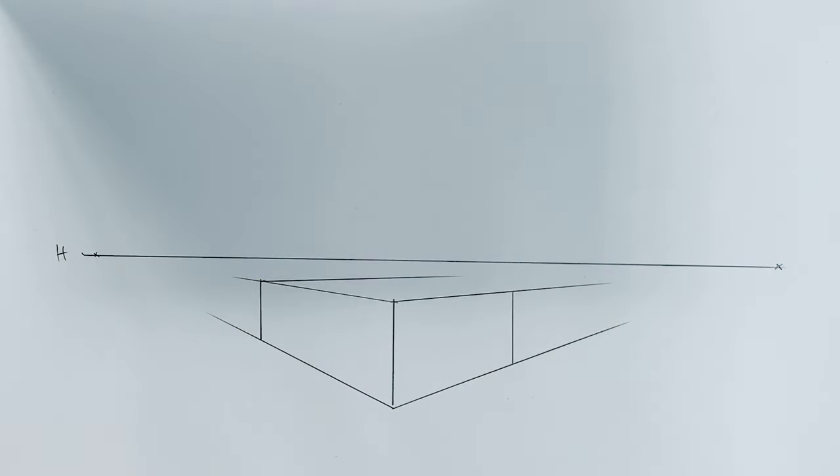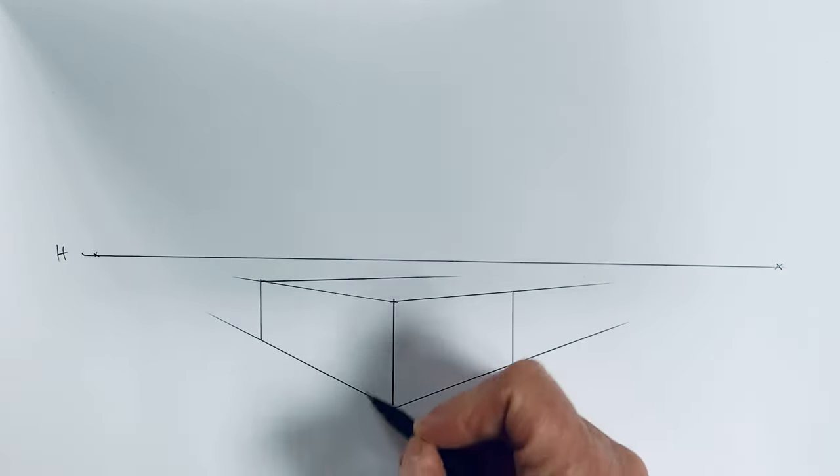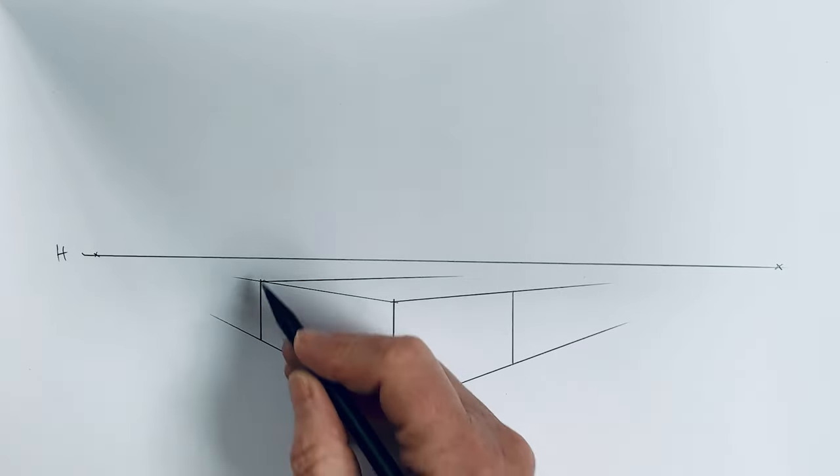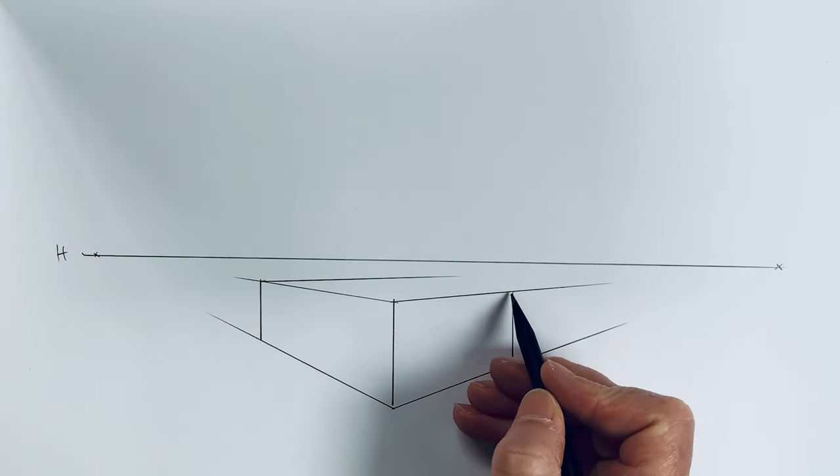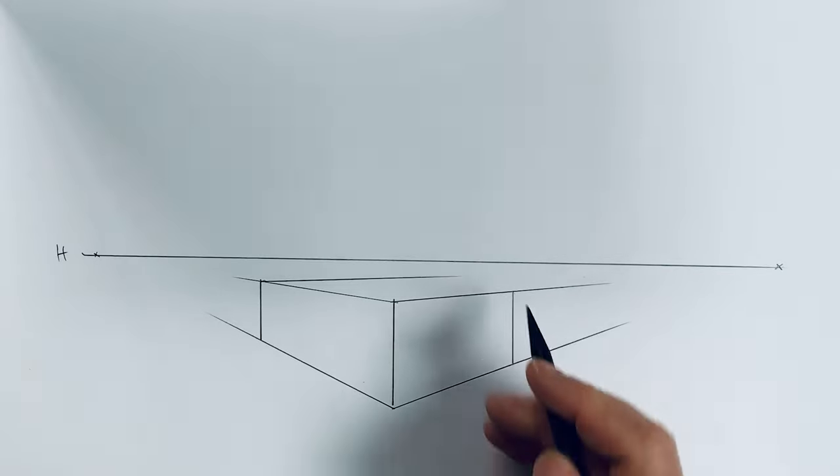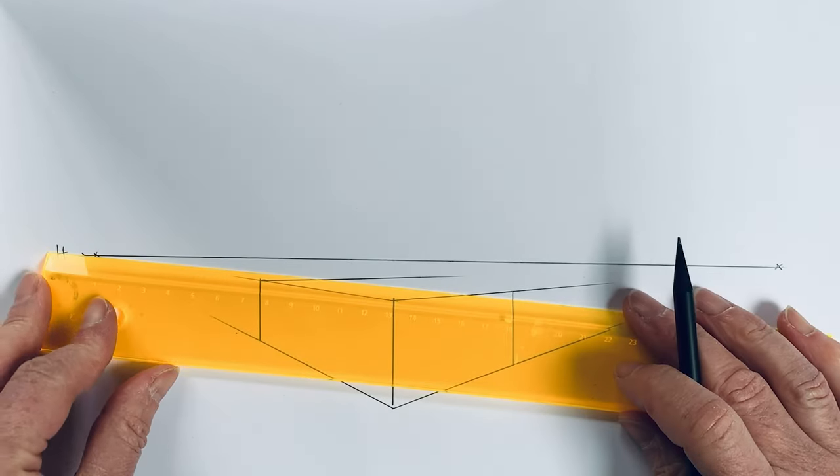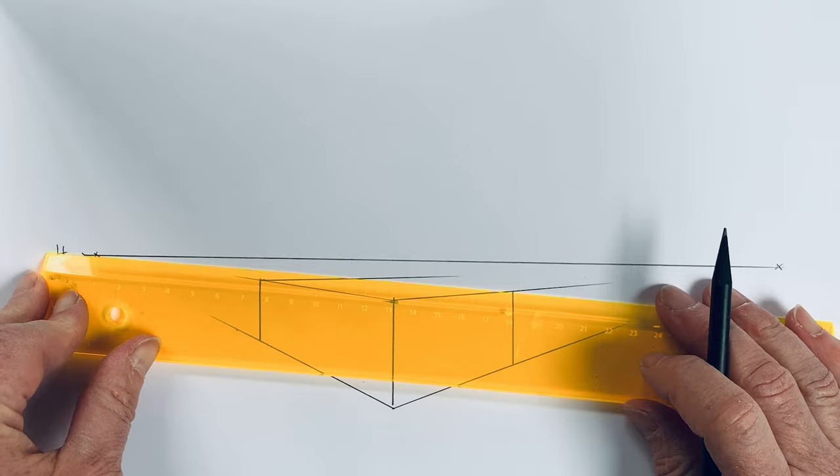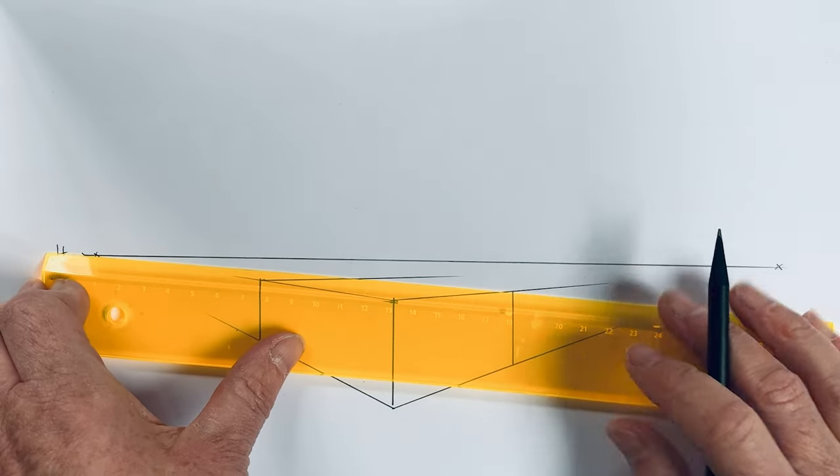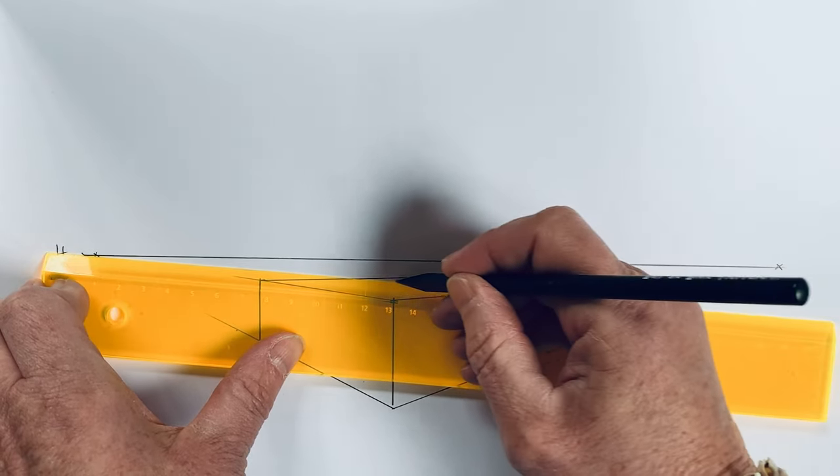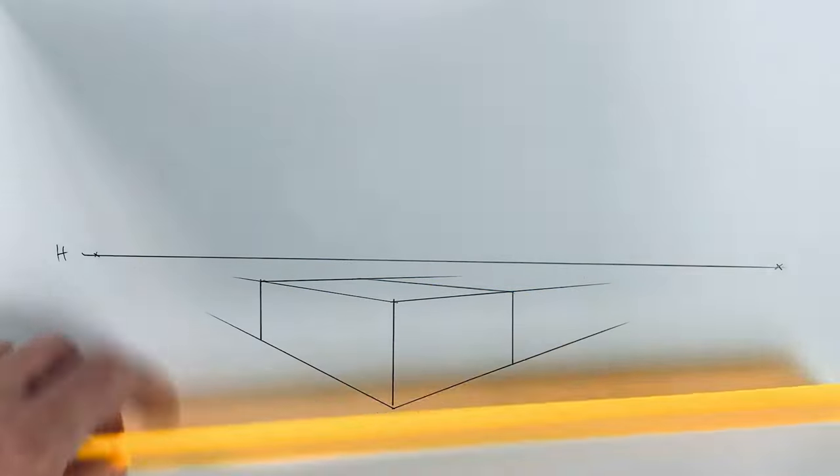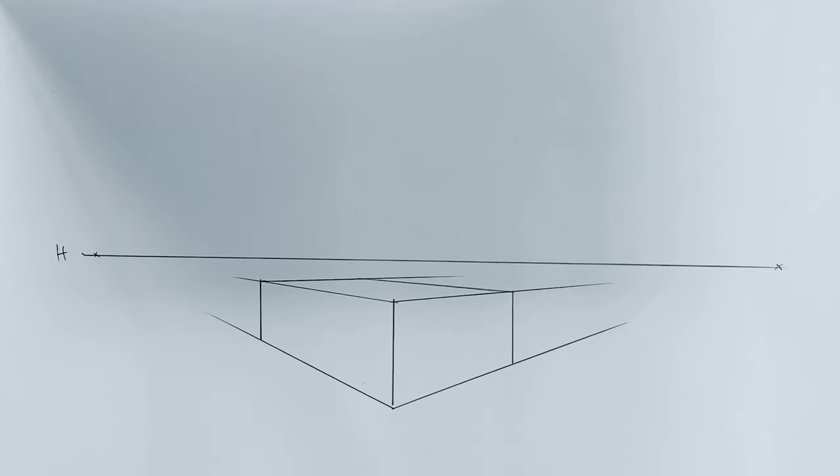And the same concept works here. So those two lines have the vanishing point here, and here there is a parallel line must have the same vanishing point like the first lines, and they go somewhere to here. And this is how my box looks like.